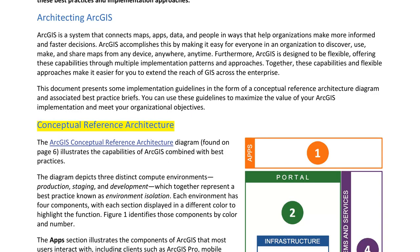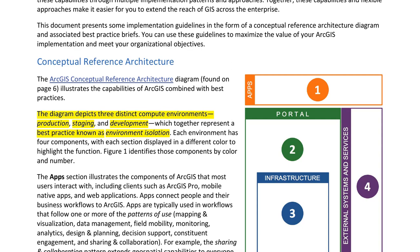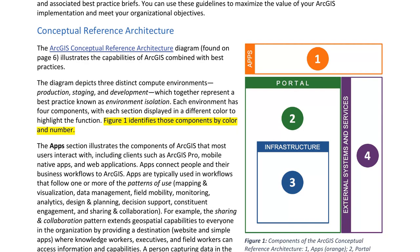Conceptual Reference Architecture. The ArcGIS Conceptual Reference Architecture Diagram, found on page 6, illustrates the capabilities of ArcGIS combined with best practices. The diagram depicts three distinct compute environments — production, staging, and development — which together represent a best practice known as environment isolation. Each environment has four components, with each section displayed in a different color to highlight the function. Figure 1 identifies those components by color and number.